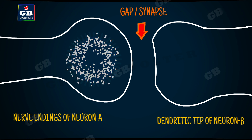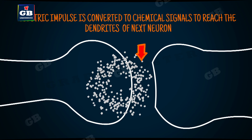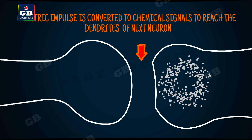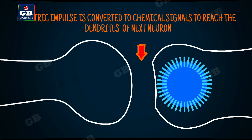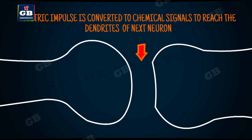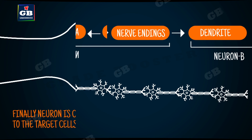The electric impulse is converted into chemicals. These chemicals cross the gap and reach the dendrite of the next neuron, where they create a similar electrical impulse. This electrical impulse passes from the dendrite to the axon, travels throughout the axon, and finally reaches the nerve endings.